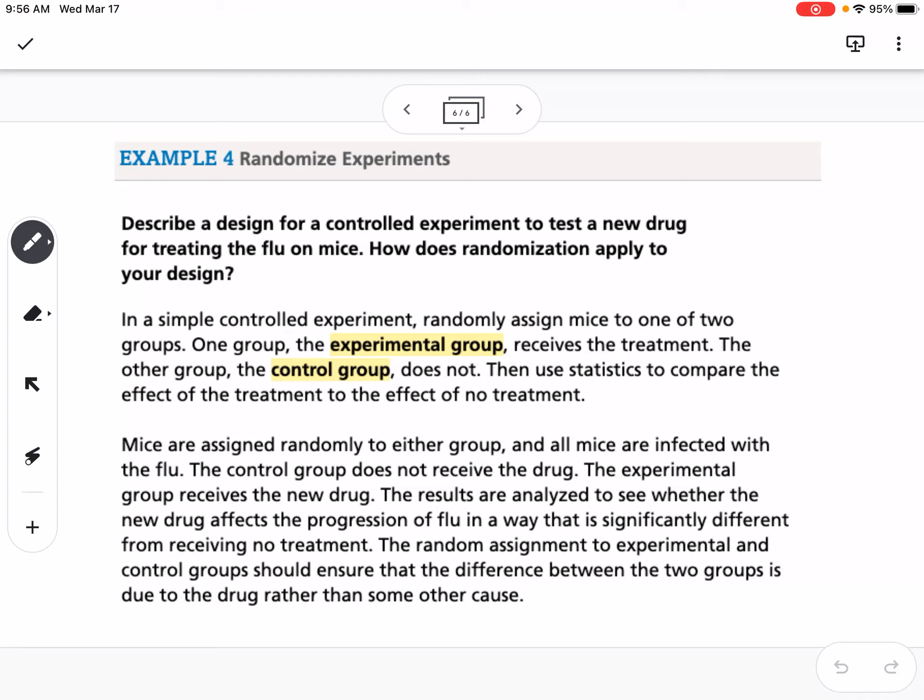The control group does not receive the drug, but the experimental group does. And the results are analyzed to see whether the new drug affects the progression of the flu in a way that is significantly different from receiving no treatment. The random assignment to experimental and control groups should ensure that the difference between the two groups is due to the drug rather than some other cause. So it's an example of randomizing experiments. That is 11-2. Thank you.